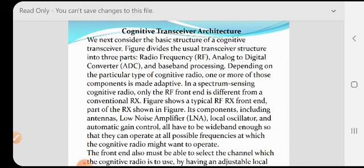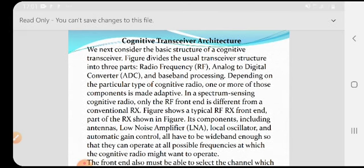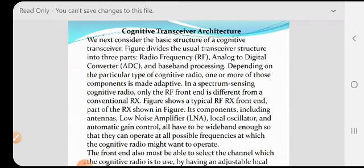Depending on the particular type of cognitive radio, one or more of those components is made adaptive. In spectrum sensing cognitive radio, only the RF front end is different from a conventional receiver. Figure shows a typical RF receiver front end. Its components including antennas, low noise amplifier, local oscillator, and automatic gain control (AGC), all have to be wideband enough so that they can operate at all possible frequencies at which the cognitive radio might want to operate.